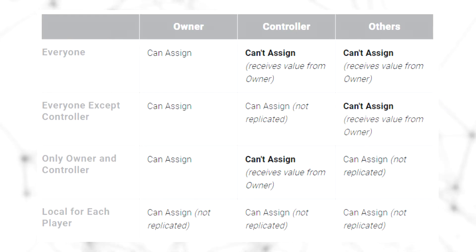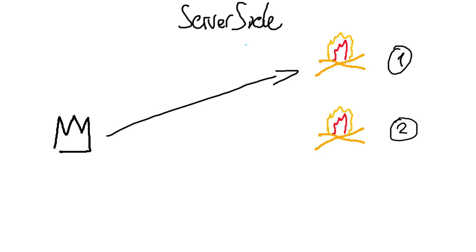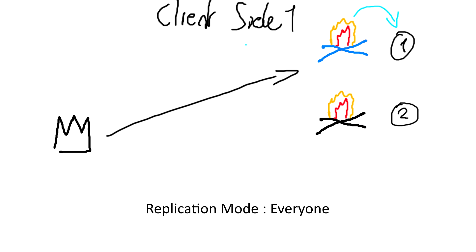Let's come back to the campfire state example. In this setup, on the server side we are the server and owner of two campfires, each controlled by its own client. With replication mode set to 'everyone': if we modify the value as the owner, we receive a callback as the owner. On client side one, we receive the callback because the value was updated on the owner. Client side two also receives the callback.